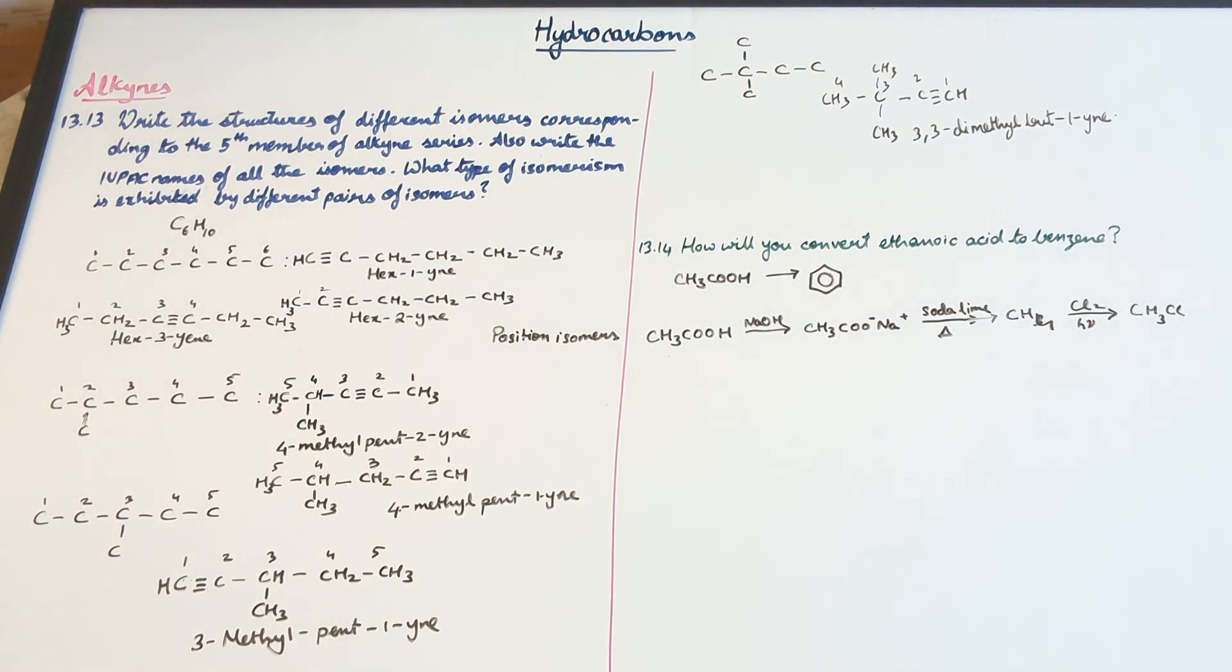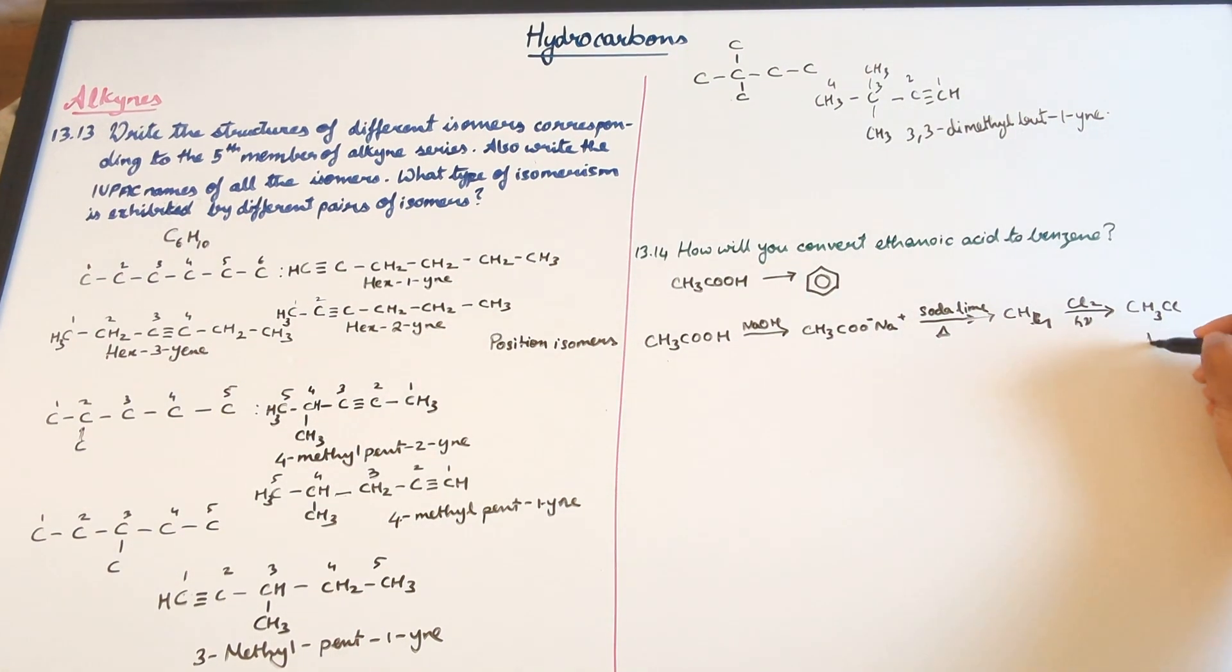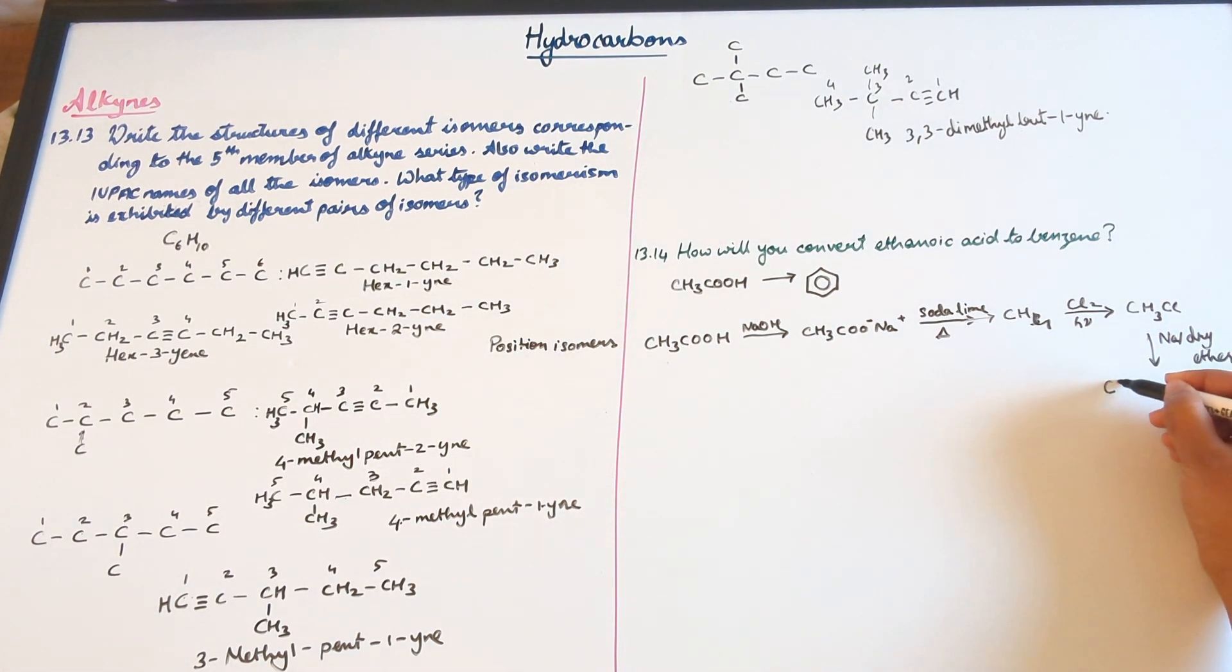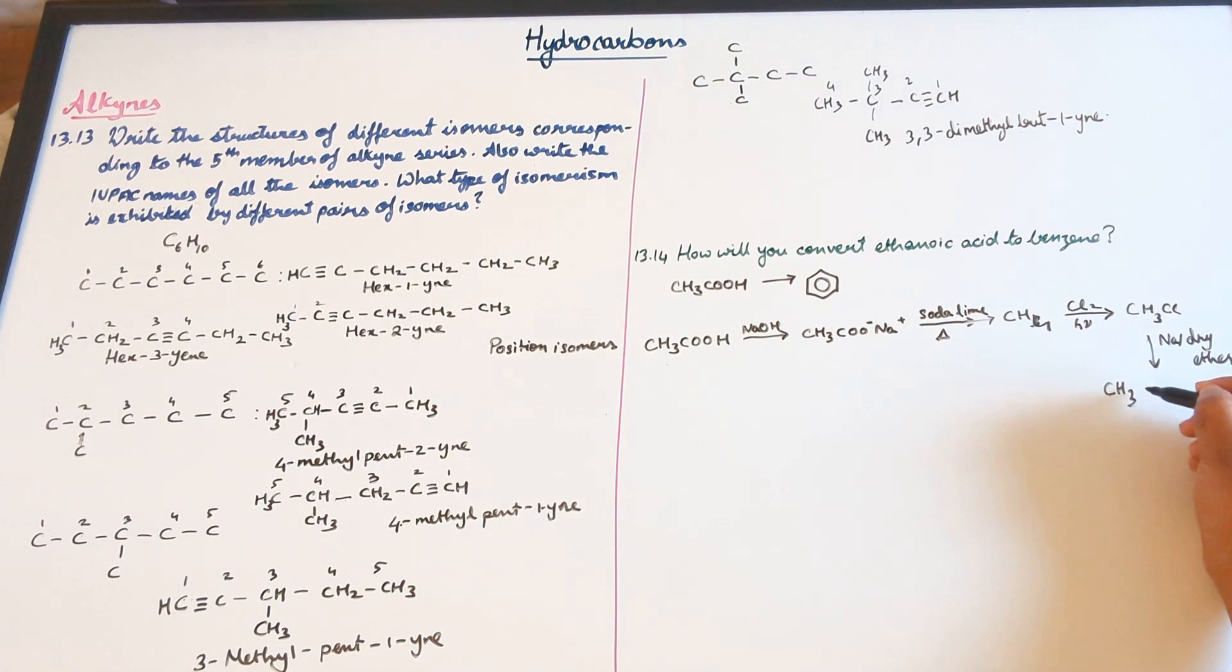Now this CH3Cl is an alkyl halide and an alkyl halide can be used for the synthesis of a higher alkyl halide. So in the presence of Na and dry ether, that is a Wurtz reaction, it is going to lead to the formation of CH3CH3 or C2H6 that is ethane.